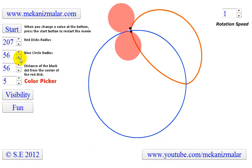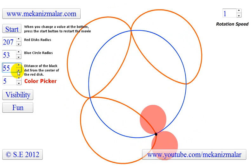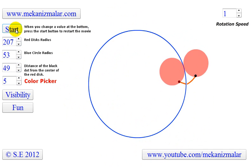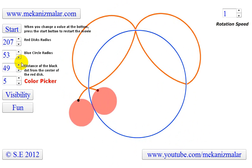The spirograph, a toy well known by many people, is one example of a hypocycloid. As you can see here, by changing some variables we can get some very interesting patterns.